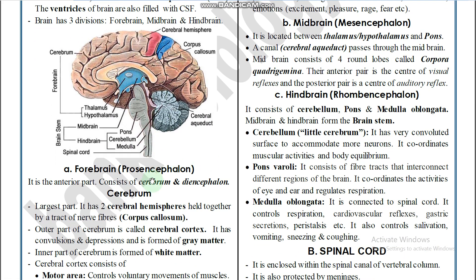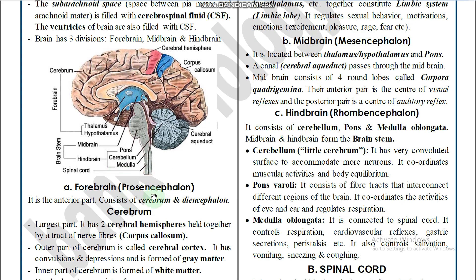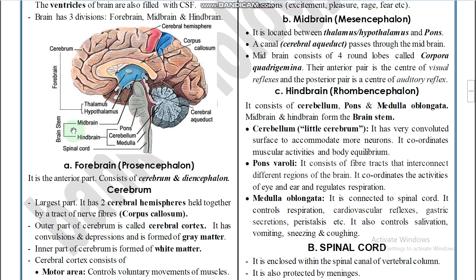The brain is majorly divided into forebrain, midbrain, and hindbrain, each consisting of different parts with different functions. The forebrain region includes the cerebral hemispheres connected by the corpus callosum, along with the thalamus and hypothalamus. The midbrain consists of the corpora quadrigemina. The hindbrain consists of the cerebellum, pons varoli, and medulla oblongata, which leads to the spinal cord.